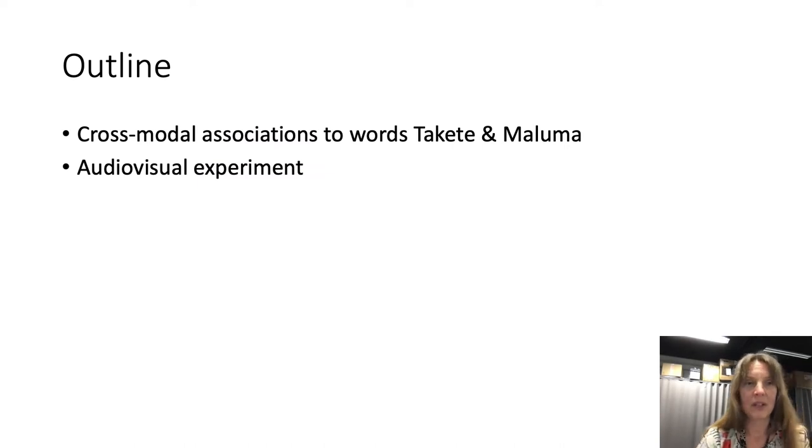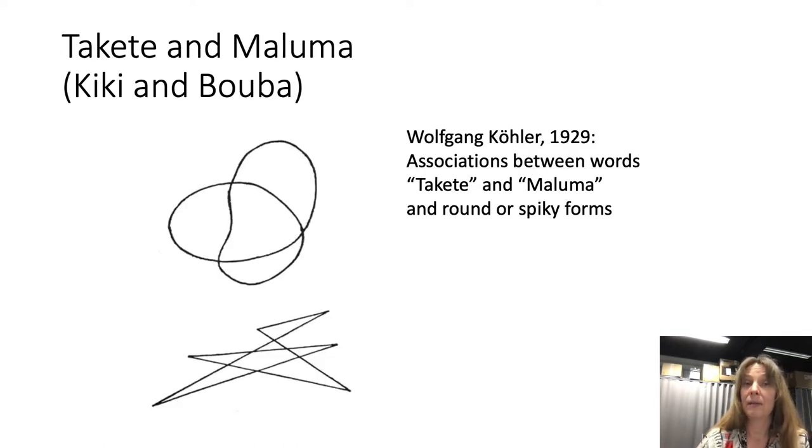So, this was an audiovisual experiment on cross-modal associations to the words takete and maluma. The effect dates back to the 1920s when Wolfgang Köhler found associations between rounded visual shapes and the word maluma, and on the other hand spiky visual shapes and the word takete. This effect has been reproduced for various word pairs since, such as kiki and booba.